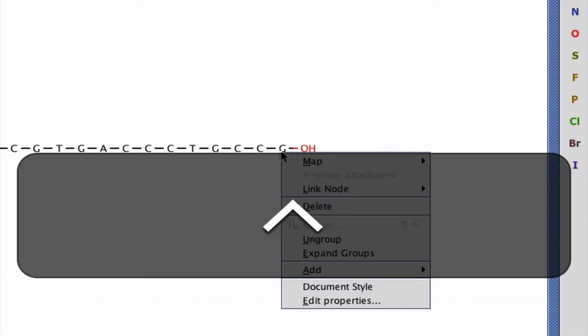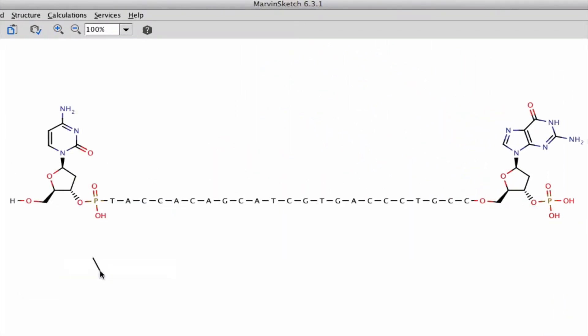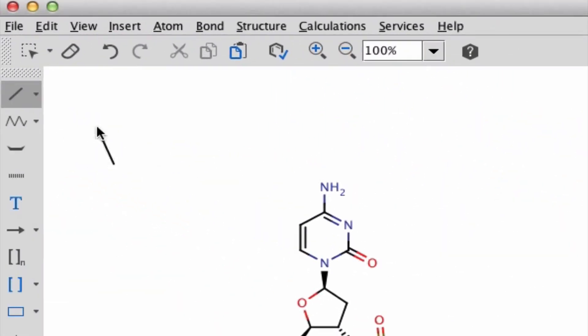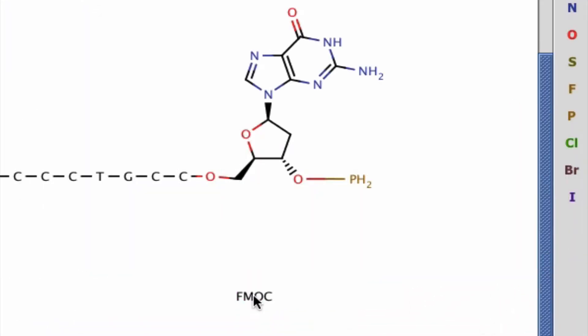So let's go ahead and look at the end groups, the 3' end on the right, 5' end on the left. That's that group. The 3' end has something known as an FMOC group. You don't know what that is. Just type FMOC and attach it to there. Now you can expand it, and there you see the FMOC group.